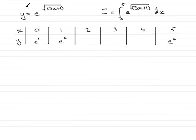Now in this question we're given that y equals e to the power of the square root of 3x plus 1, and also that I equals the integral from 0 to 5 of e to the power of the square root of 3x plus 1.